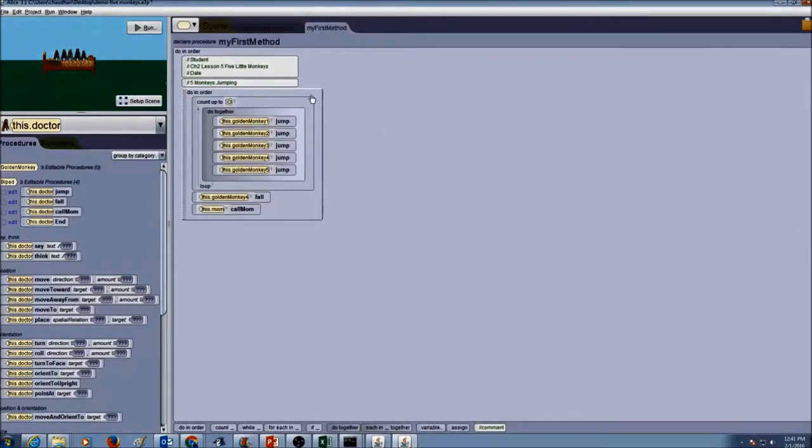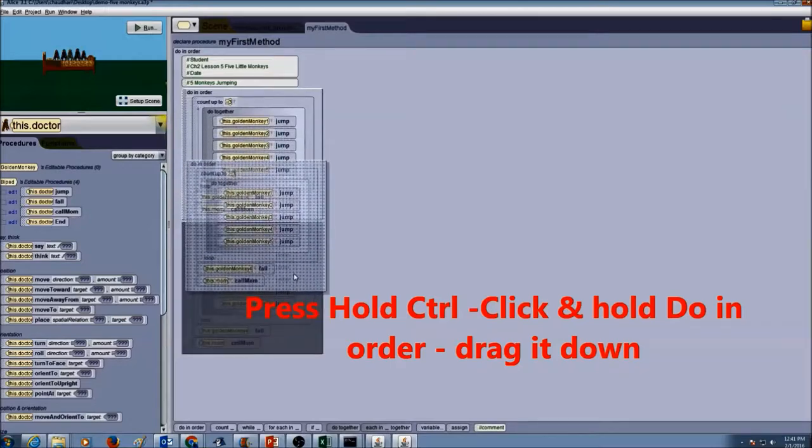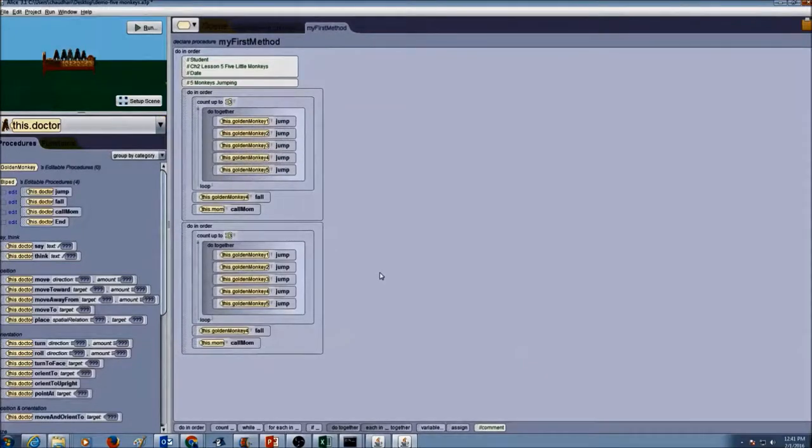Now we want to do the same thing for 4 monkeys jumping. So it doesn't make sense to do all of this again. So the easiest way is copy and paste. In one of my previous lessons I showed you how to do copy and paste. So I am going to press control, click on my do in order and hold it and drag it down. So that makes a duplicate copy of it.